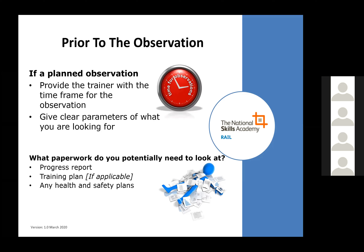What sort of paperwork do you potentially need? This is not a requirement but an example of good practice. Good practice is that the trainer will have ready for the observation their progress report, their training plan for the full qualification they're delivering, and potentially any additional health and safety plans depending on the qualification. Good practice is to almost have them on the desk ready before the observation, so should you as an observer wish to, you can ask the trainer to look through these.